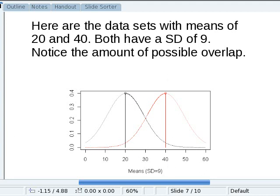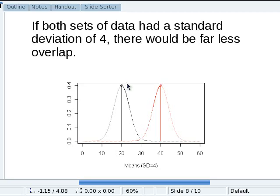If both sets of data had a standard deviation of 4, there would be far less overlap. Here's the cutoff point of 34%, one standard deviation above the mean, and one standard deviation below the mean, and you notice there's no overlap. There's not much overlap until you get down into the very tail of the distributions.